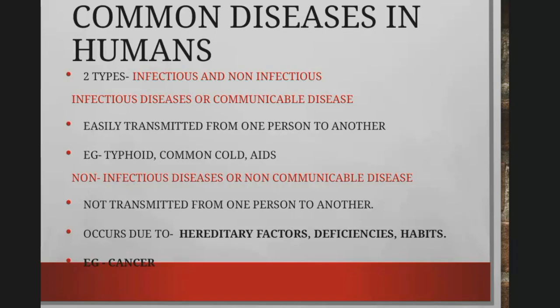Now we can focus on common diseases in humans. Basically, there are two types: infectious disease and non-infectious disease. Infectious diseases, also called communicable diseases, are easily transmitted from one person to another — examples include typhoid, fever, common cold, and AIDS. Non-infectious diseases, also called non-communicable diseases, are not transmitted from person to person; they occur due to hereditary factors, deficiency such as vitamin deficiency, or habits. Cancer is a very good example of a non-infectious disease.